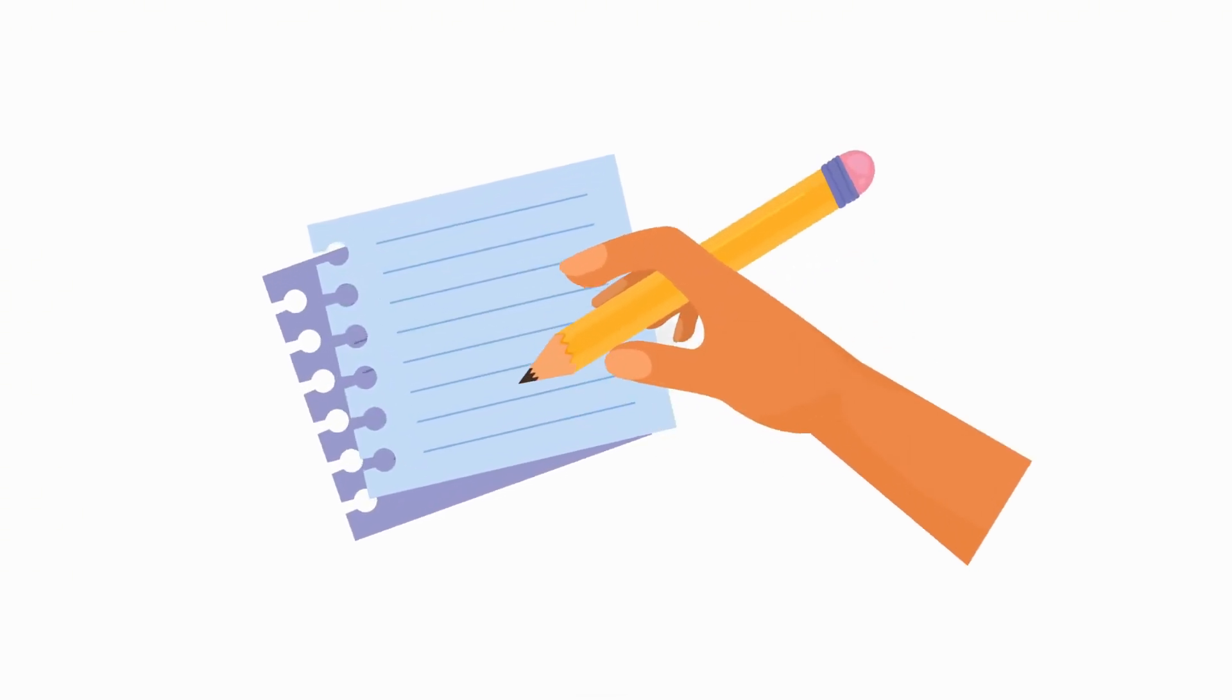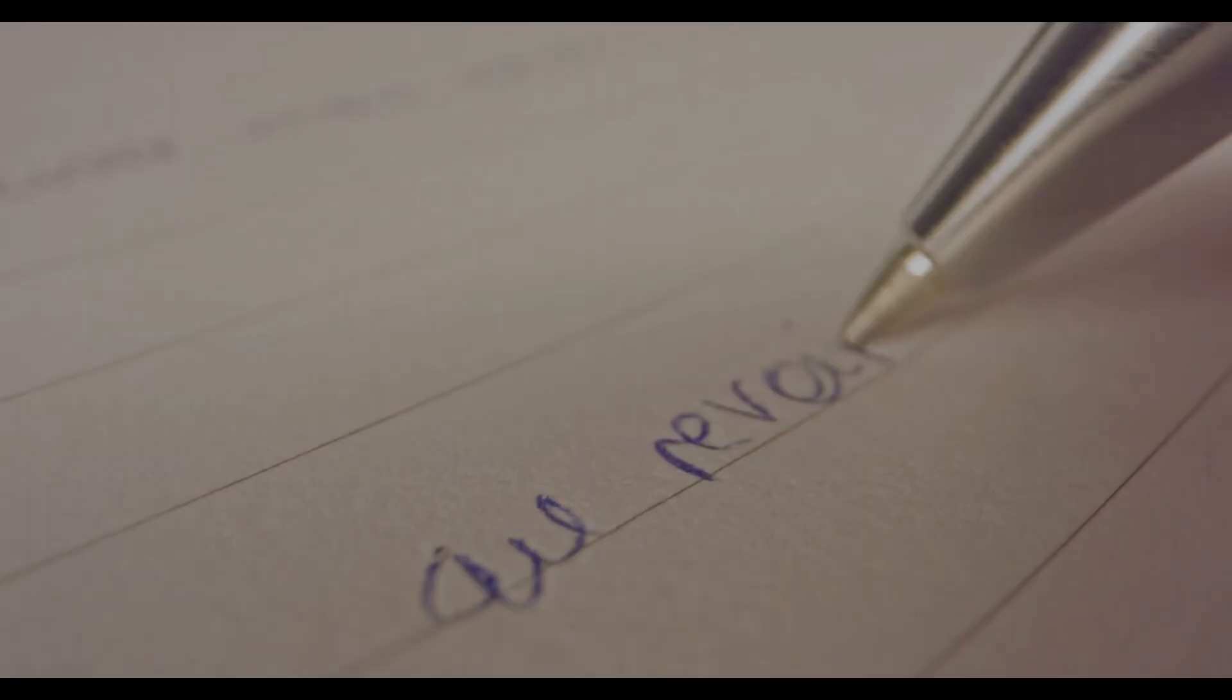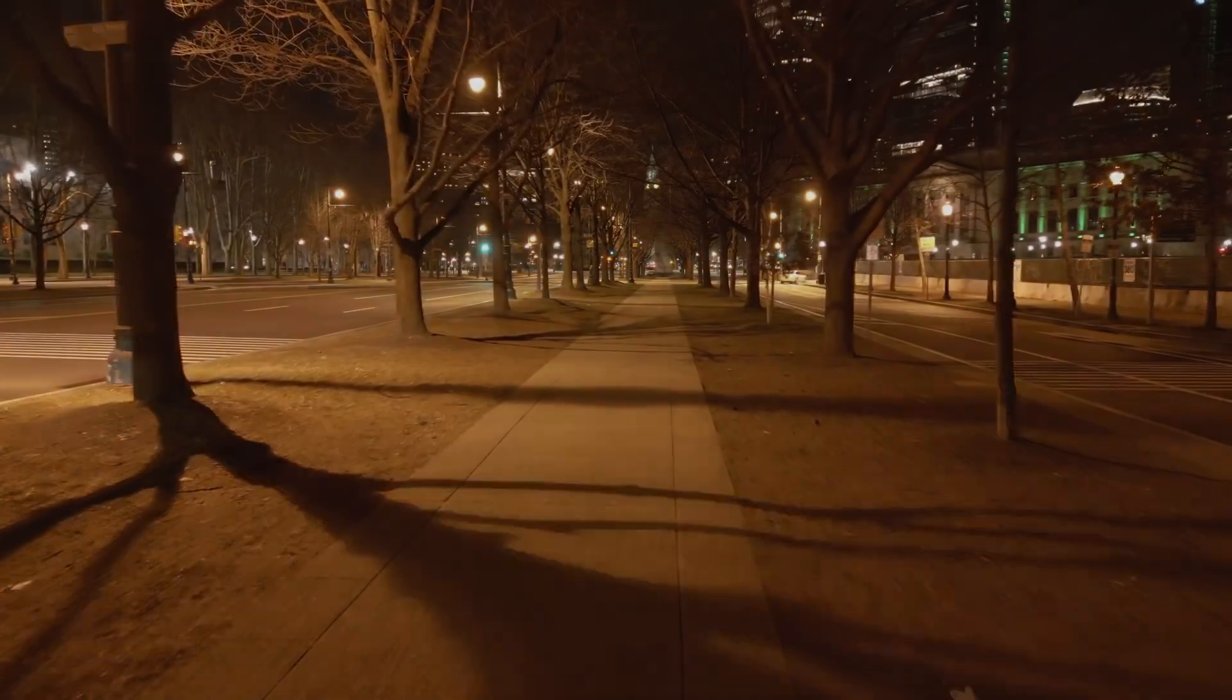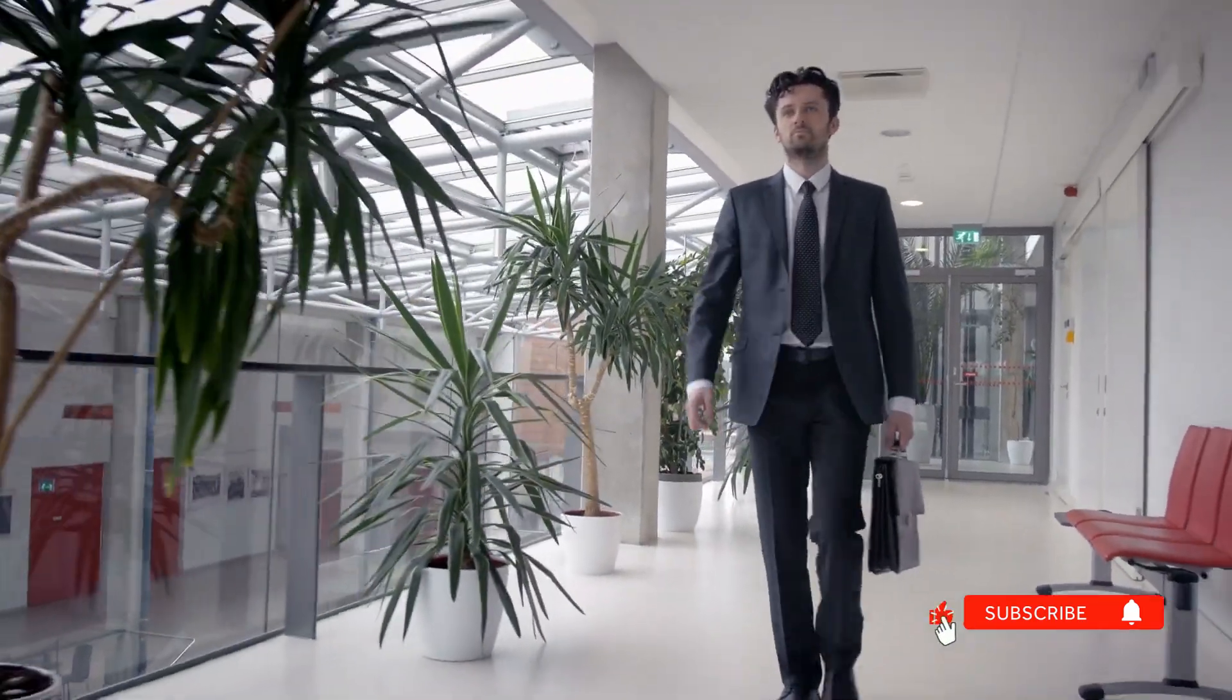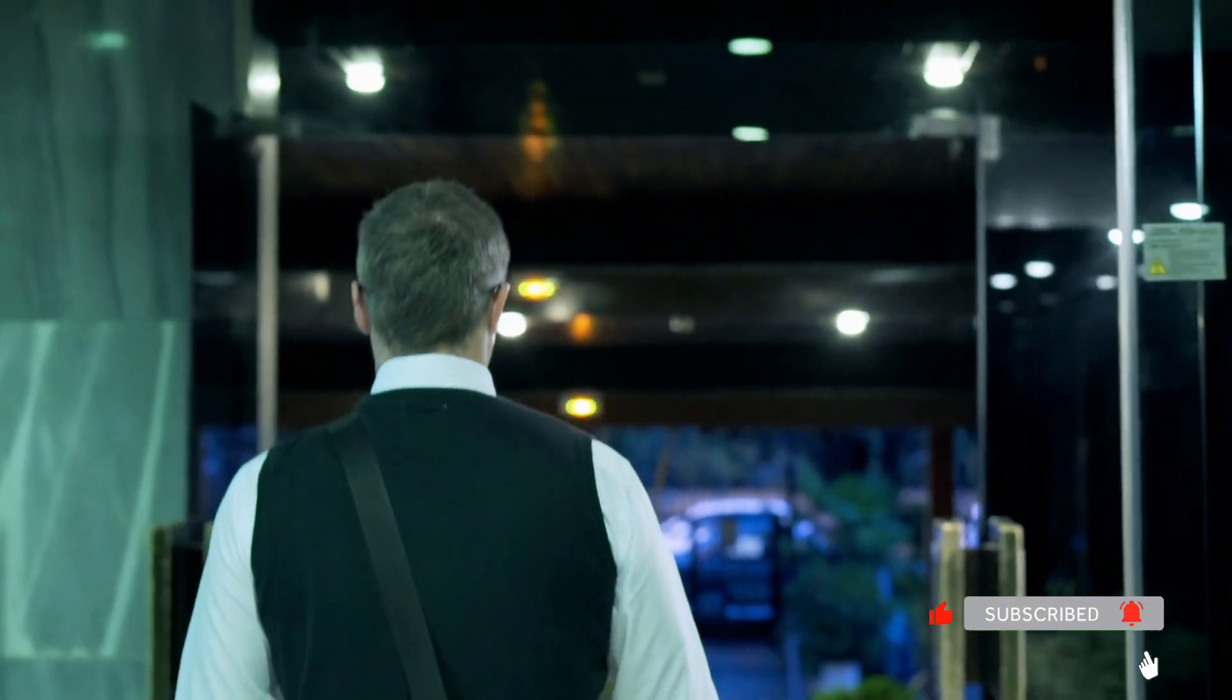Close all work tabs and applications. Write tomorrow's top three priorities on paper. Not digital. Then take a 15-minute walk outside without your phone. This signals your brain that the workday is over. You must leave work before you can start your evening.